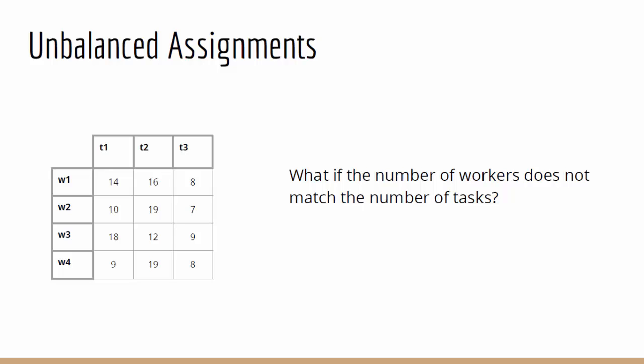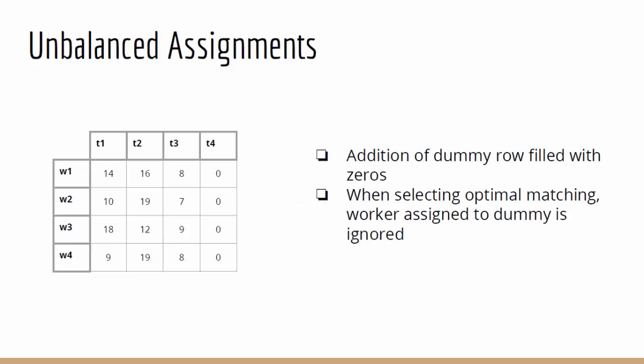Finally, a potential side case. In an instance when we have an unbalanced assignment, either more workers than tasks or more tasks than workers, we have to change our matrix. We can do that with the addition of a dummy row filled with zeros. And when it comes time to select your optimal matching, the worker that is assigned to the dummy is simply ignored.